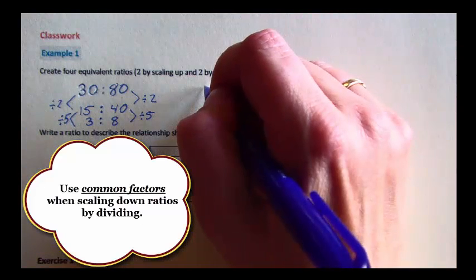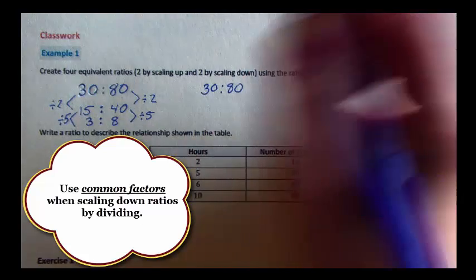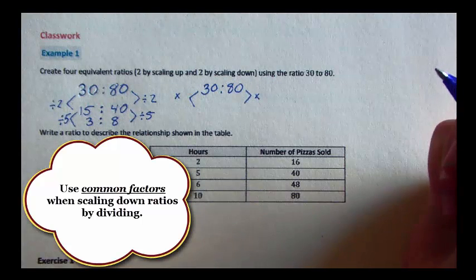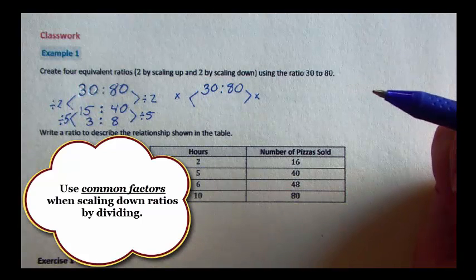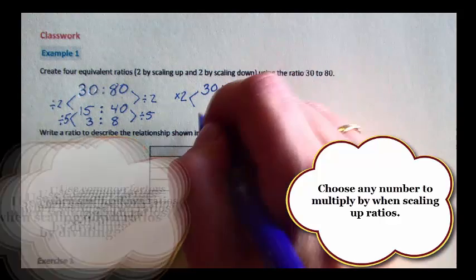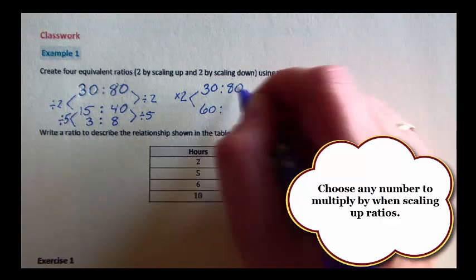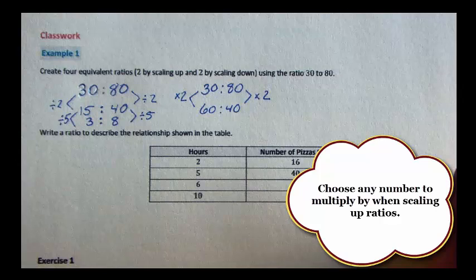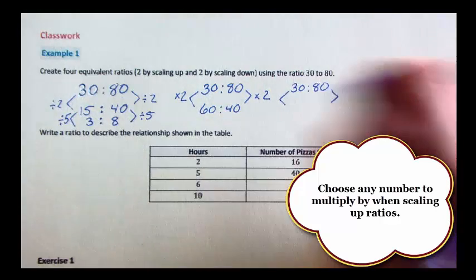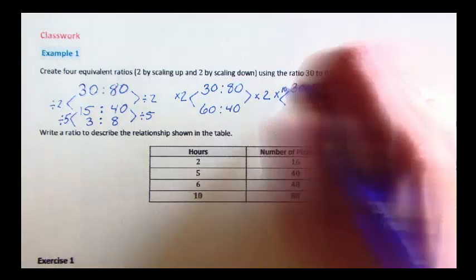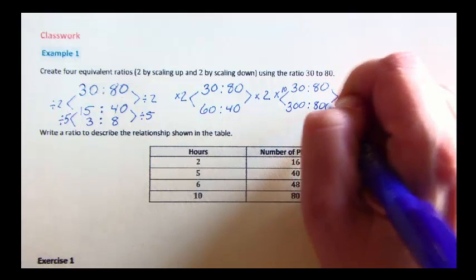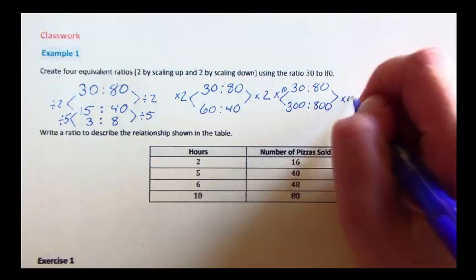If I wanted to scale up, I'd start with my ratio and multiply both of them by the same thing. You can pick any number you want to multiply by. When you divide, you need to pick a number that goes into both parts of the ratio. I'm going to start by multiplying by 2. 2 times 30 gives me 60. 2 times 80 gives me 40. If I do it again, I can pick another number to multiply by. This time I think I'll multiply by 10. 2 and 10 are some of the easiest numbers to use to scale up.